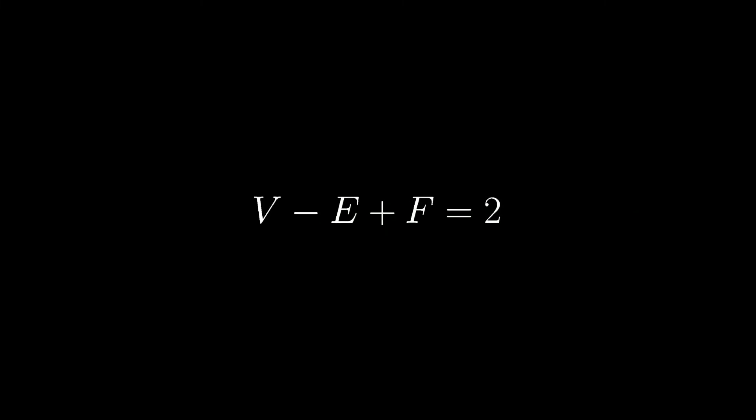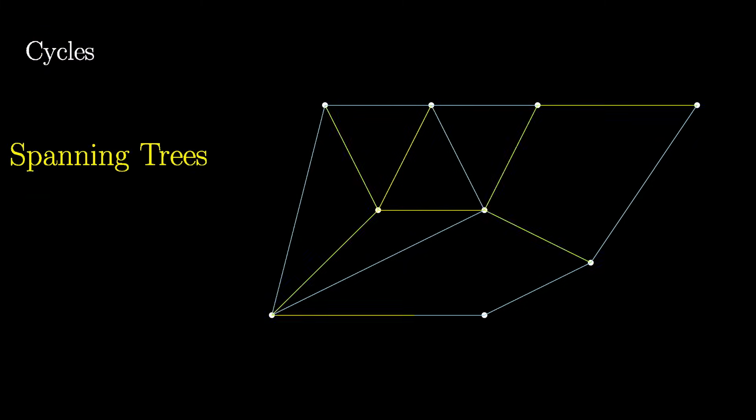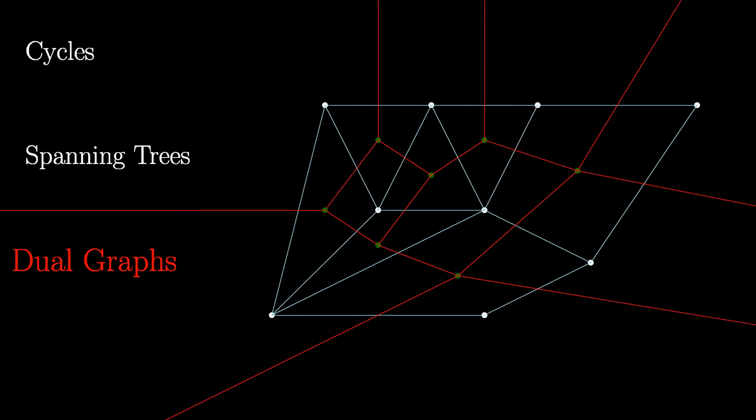Before describing the proof, I need to go through three pieces of graph theory terminology: cycles, spanning trees, and dual graphs. If you are already familiar with some of these topics, and don't care to see how I describe them, feel free to click the appropriate annotation and skip ahead.